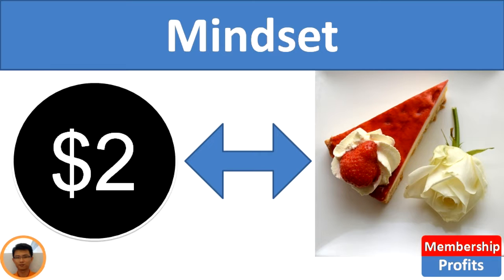For example, I have $2 and I would like to exchange it for something — like a slice of delicious cake. I paid $2 for that. Do I like my $2? Of course I do. But I value the slice of delicious cake more than $2. As a result, I'm happy to exchange my $2 for it.